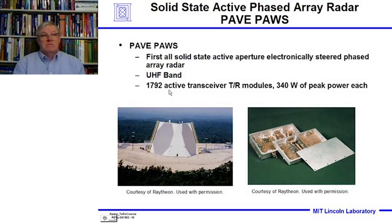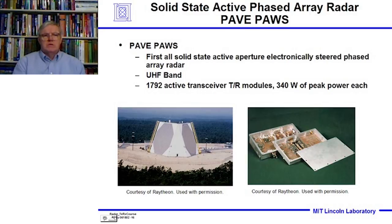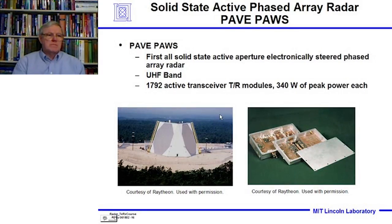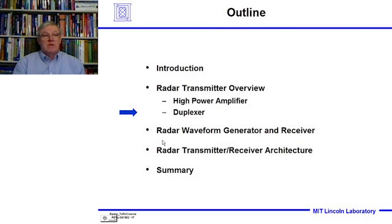PAVE PAWS has 1,792 active transmit-receive modules, each with 340 watts of peak power, using 3 transistors in parallel. The transmitter and receiver are different pieces within each module. These systems are very reliable — well over 150,000 hours mean time between failure. This radar is located on Cape Cod and performs ballistic missile early warning. It's built by the Raytheon company.